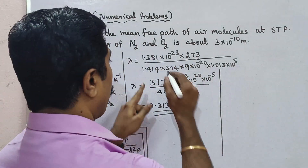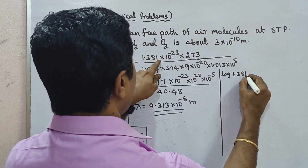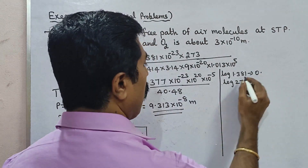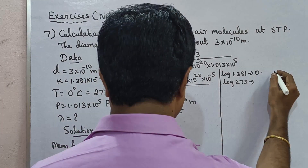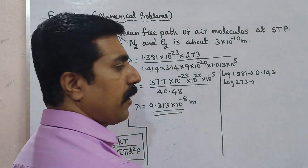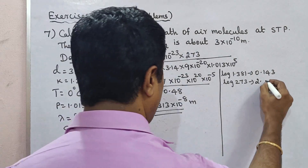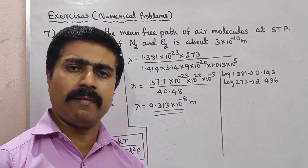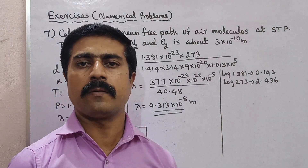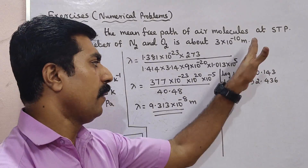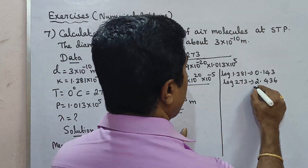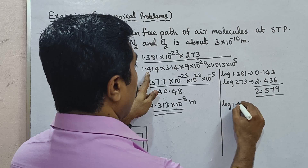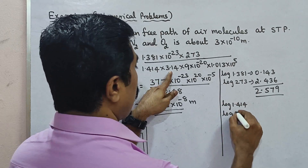Using the logarithm method for multiplication: log of 1.381 plus log of 273. The number of digits is 1. Log 1.381 gives approximately 0.1403, and log 273 gives approximately 2.4362. Adding these for the numerator log sum gives approximately 2.5765.